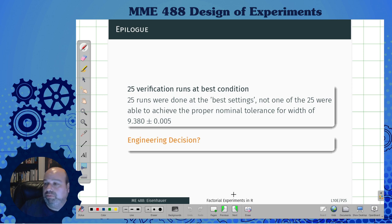The epilogue of this whole particular experiment was they did 25 runs of the best conditions. Unfortunately, not one of the 25 was able to achieve the proper nominal tolerance of length of the 14.5 plus or minus 0.05. So what did they do? Decided at this point they couldn't figure out that there is no optimal solution. So they had to redesign the die and that's just sometimes happens.